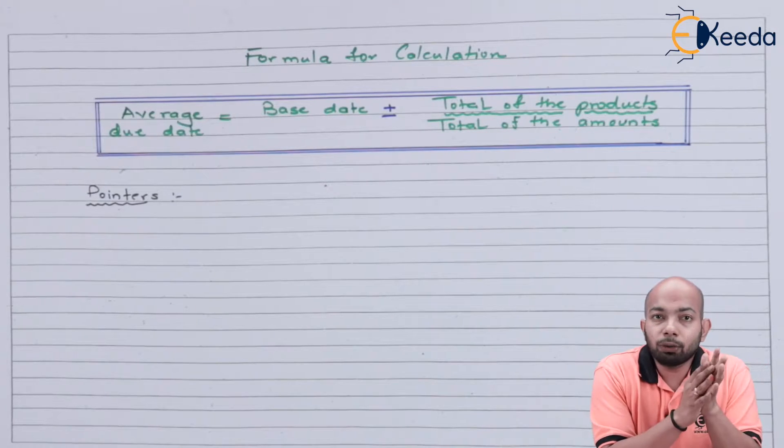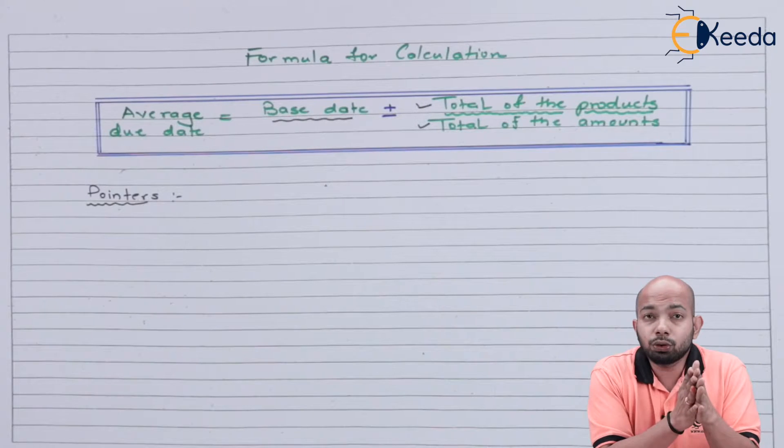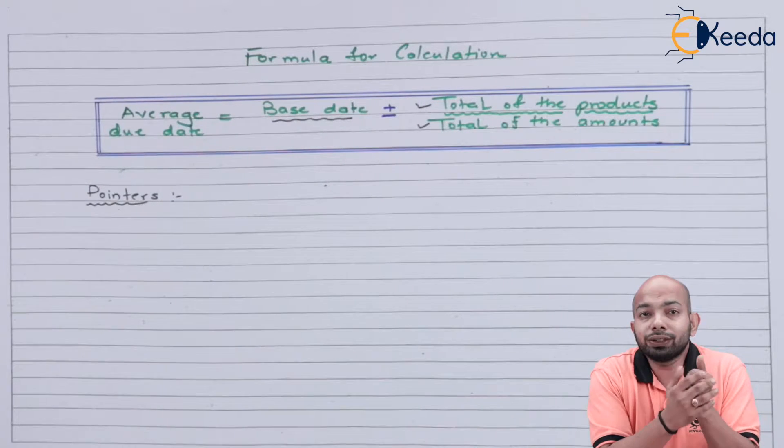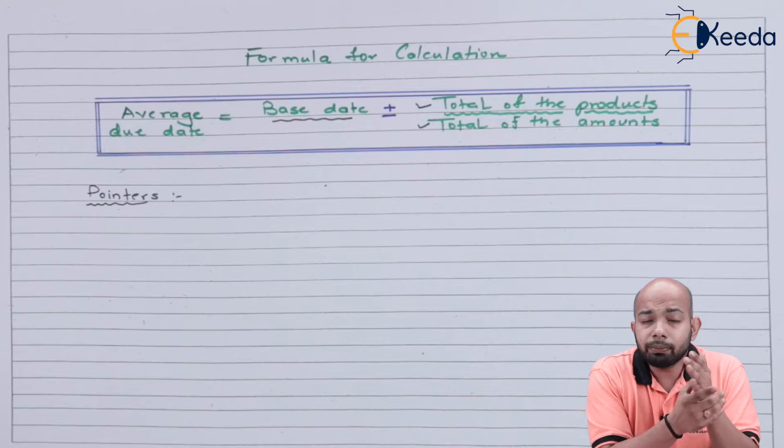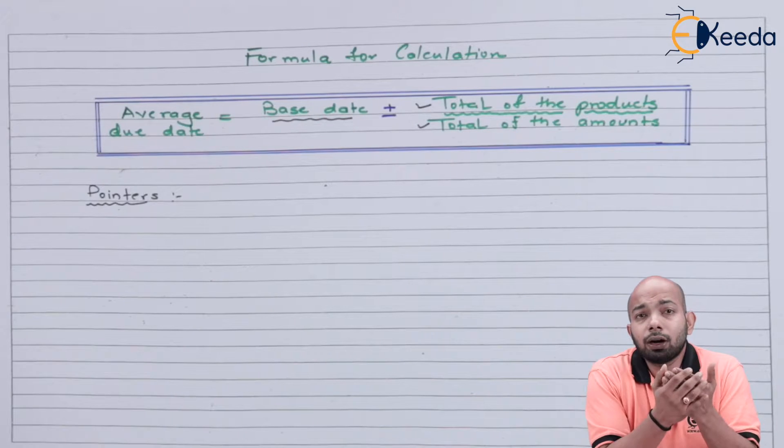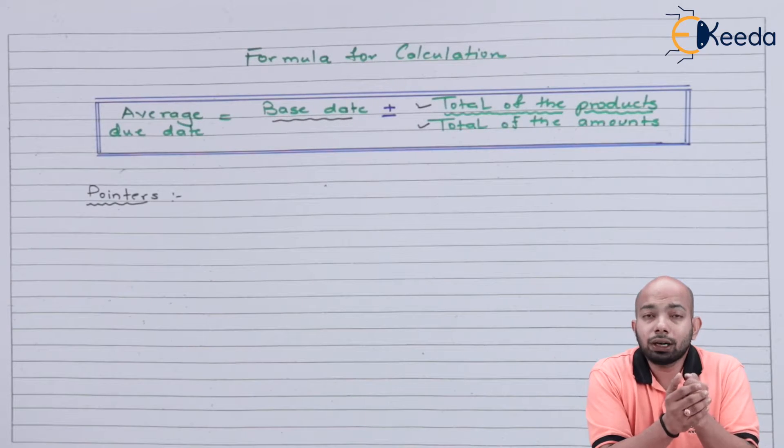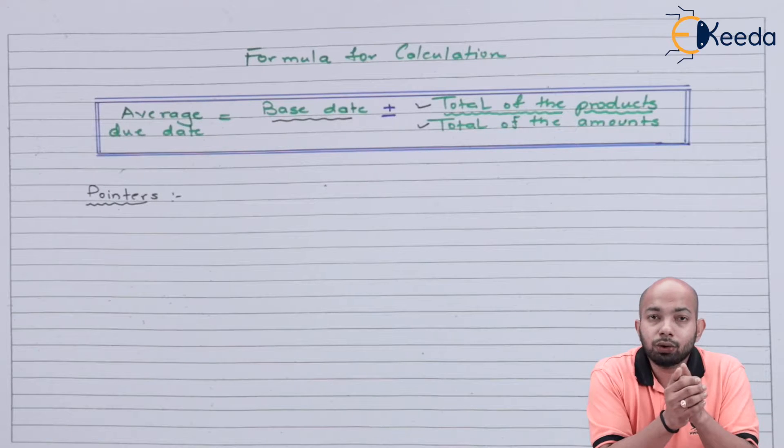This is the basic formula. Now, while making sure all these amounts are calculated, we need to understand certain pointers, which we will mention right now.